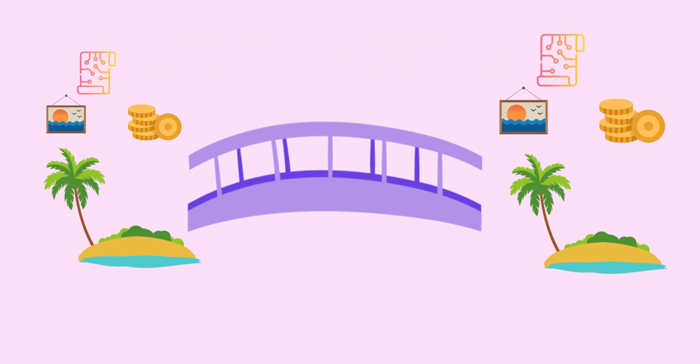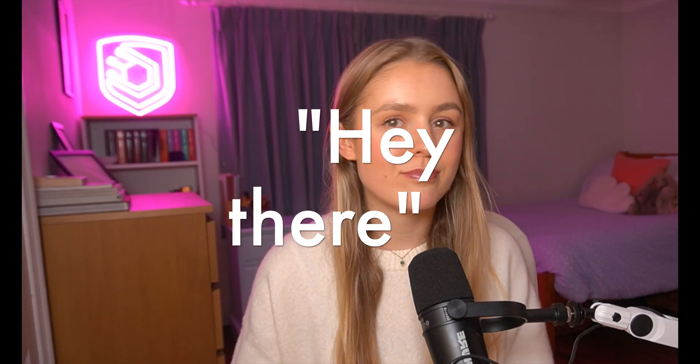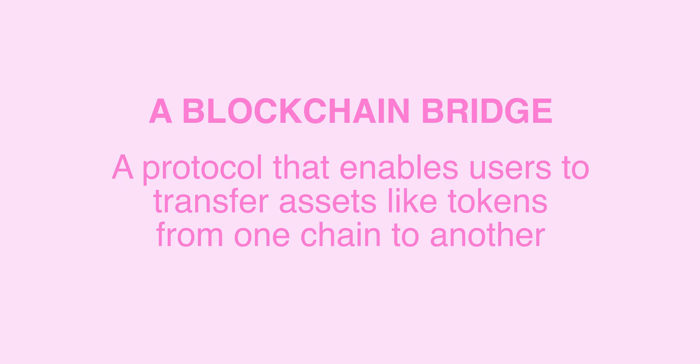That something can be tokens, assets, NFTs, any kind of data you want. Simply a message could be transported over. This is cross-chain messaging. A blockchain bridge typically involves transferring tokens from one chain to another. But why do we need to transfer data and assets cross-chain? Why do we even need bridges?